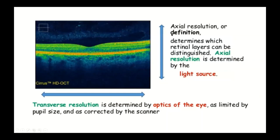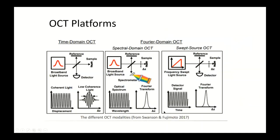One has to remember there are axial and transverse resolutions: axial resolution is determined by the light source, while transverse resolution is determined by the optics of the eye. The Fourier domain OCT is comprised of spectral domain and swept source OCT technologies. In the time domain system, a reference mirror moves to compensate for reflected light. In Fourier domain OCT, a fixed-position reference mirror is used, resulting in less movement, improved capture speed, and much better image quality.